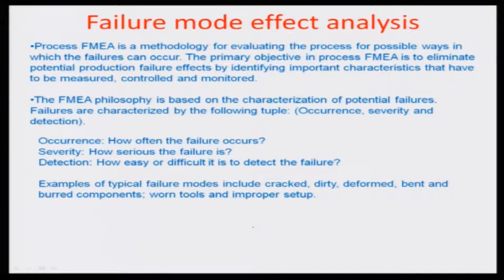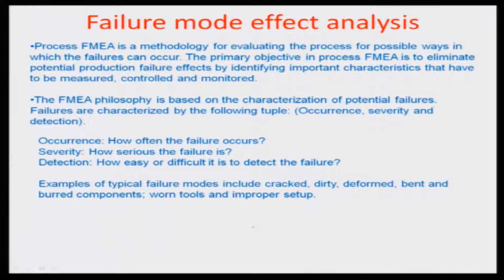The methodology typically used for process FMEA is the characterization of various potential failures and their causes for a particular system. Failures can be characterized by three important things. First is occurrence - how often a particular failure mode occurs. For example, if we are talking about paint peel-off or a dust spot in a painted automotive body, how often this failure happens and goes undetected from the paint stage through to the next assembly stage.